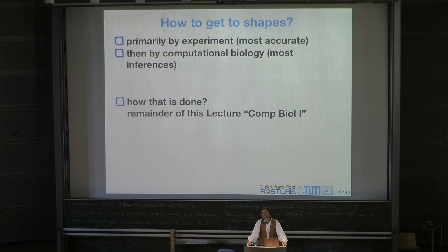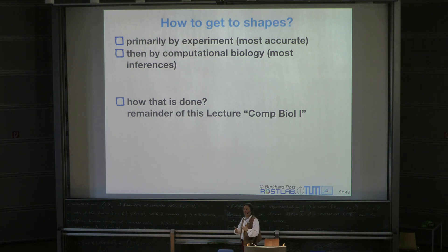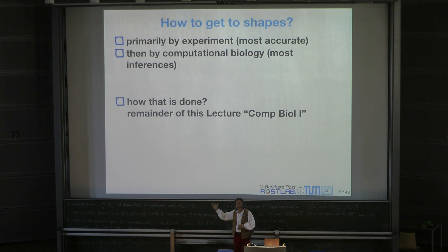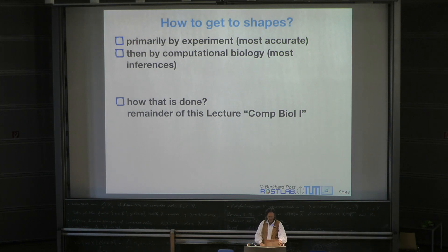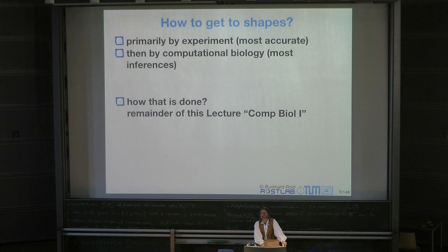Most of the structures we know are not done by experiment. They are similar to those that are done by experiment and are done by computational biology. So they are inferred, but all of that goes back to experiment. For all the others, in order to break 3D structure, we actually cannot do it directly. We try to simplify—we try to address simplified aspects. And that will be the remainder of the lecture.